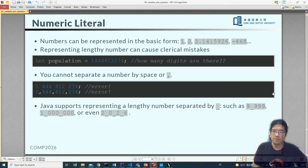Now numerical literal refer to the number in their basic form: 1, 2, 3, 4, 14, negative 4, 6, 8, etc. Representing a lengthy number could cause some technical mistakes. So for example this one, the population here, can you see how many digits are there? I can't. In Word or Excel you can insert space or comma to represent a number so that it will look a little better, easier for people to read it.